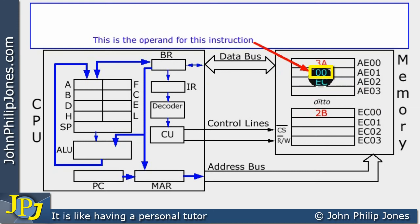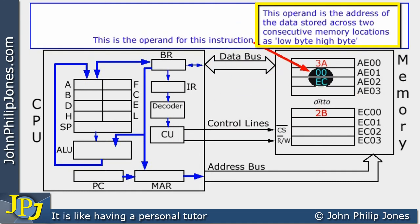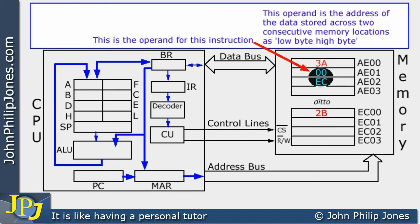It's just that it's been saved across two consecutive memory locations, where this is the 00 part of the address and this is the EC part of the address. When combined together it makes the address EC00. It's stored in two consecutive memory locations as what we describe as low byte, high byte — where the low byte of the address appears after the opcode and then the next location has the high byte of the address. So the operand is the address of the data stored across two consecutive memory locations: low byte, high byte.